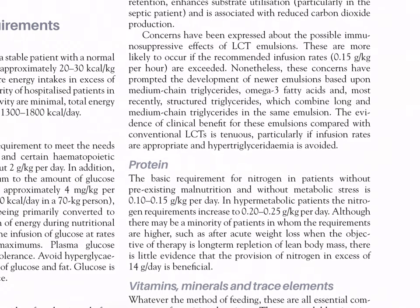These concerns have prompted development of newer emulsions based upon medium-chain triglycerides, omega-3 fatty acids, and most recently structured triglycerides combining long and medium chain triglycerides in the same emulsion. The evidence of clinical benefit from these emulsions compared with conventional LCTs is tenuous, particularly if infusion rates are appropriate and hypertriglyceridemia is avoided. Protein: the basic nitrogen requirement in patients without pre-existing malnutrition and without metabolic stress is 0.10–0.15 g/kg/day. In hypermetabolic patients, nitrogen requirements increase to 0.20–0.25 g/kg/day. There is little evidence that provision of nitrogen in excess of 14 g/day is beneficial.